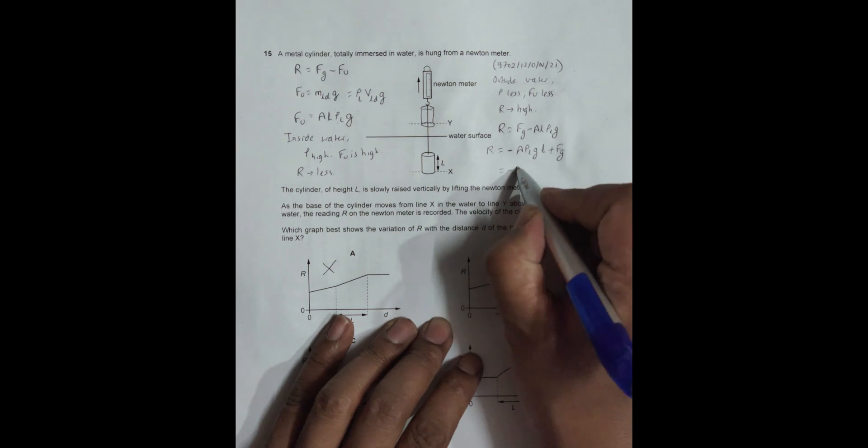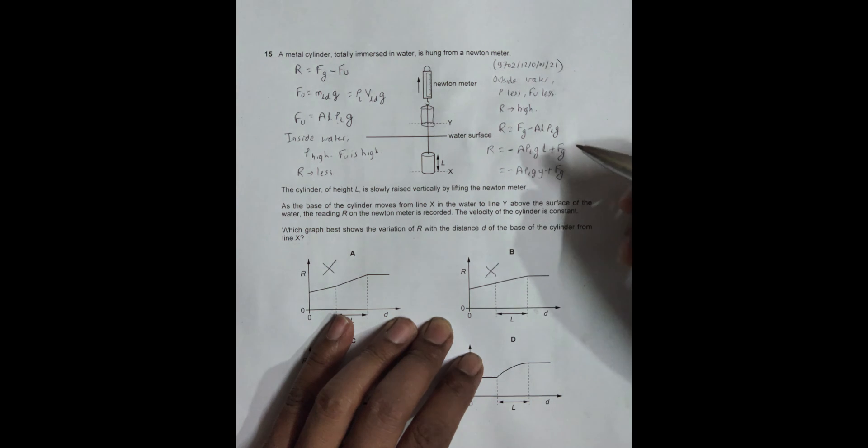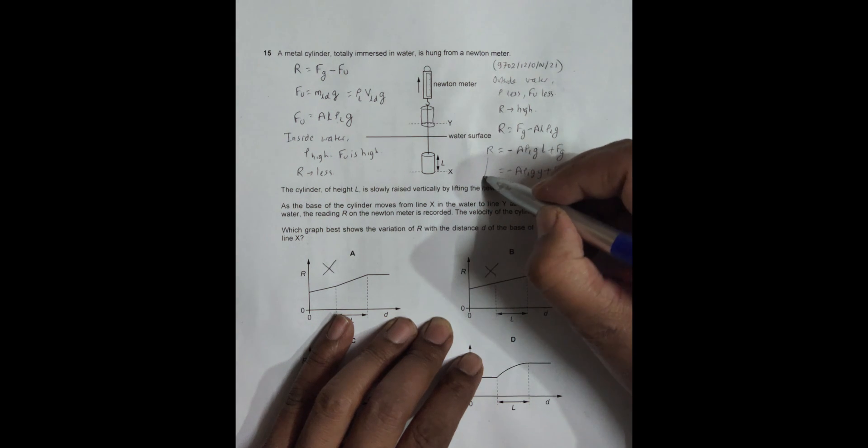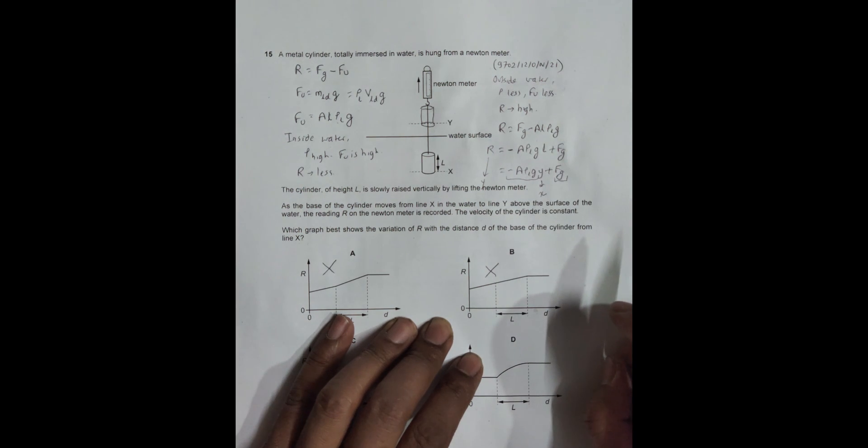Now if this is the Y axis and this is the X axis, then I have this as the slope and this as the intercept. So that means the graph should be a straight line with some intercept.